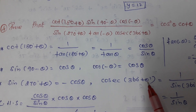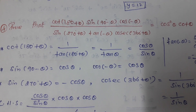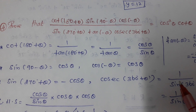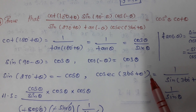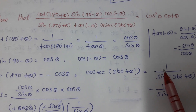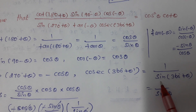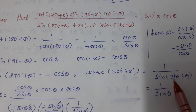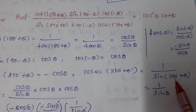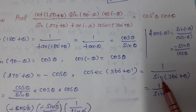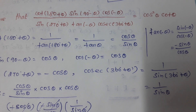Next, cosec(360+θ). Cosec(360+θ) we can write as 1 by sin(360+θ). In the first quadrant sin is positive, so we can write sinθ.